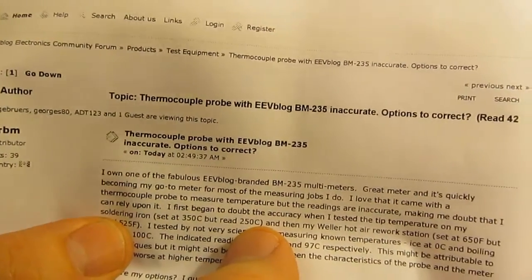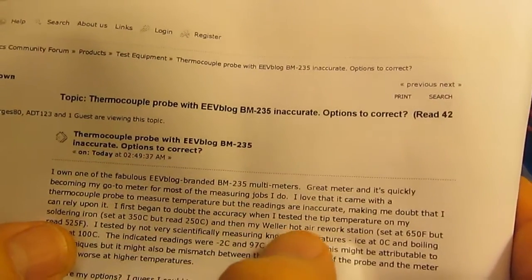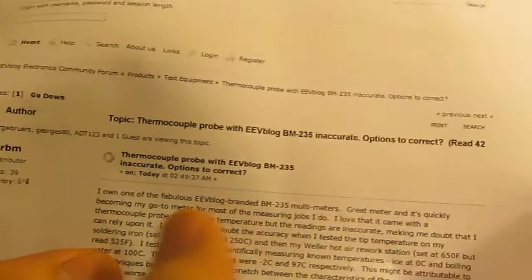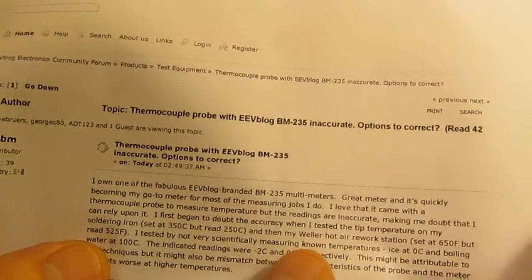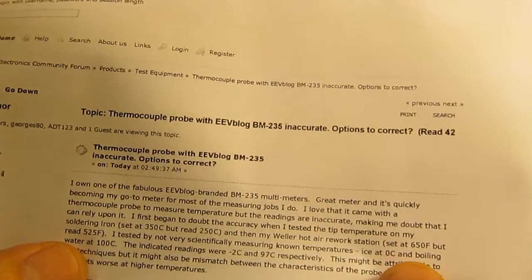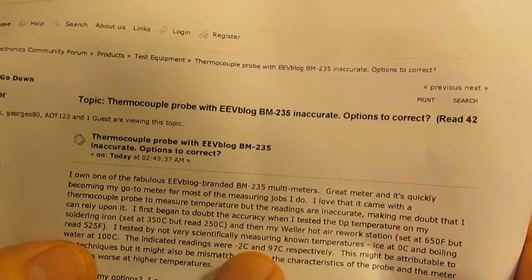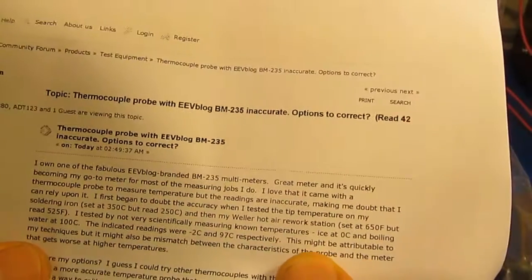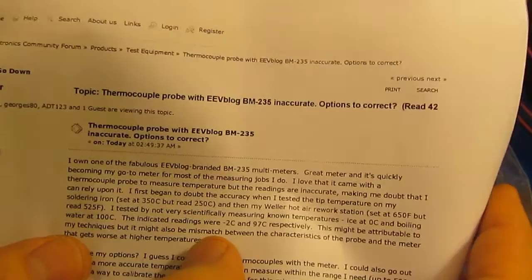Well that's not too surprising. And then my hot air rework station set at about 650 F but reads about 625 F. I tested not very scientifically, measuring known temperatures ice at zero and boiling water at 100. The indicated readings were minus 2 C and 97 degrees respectively.